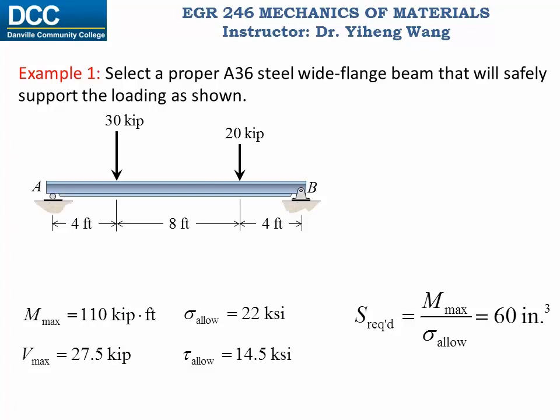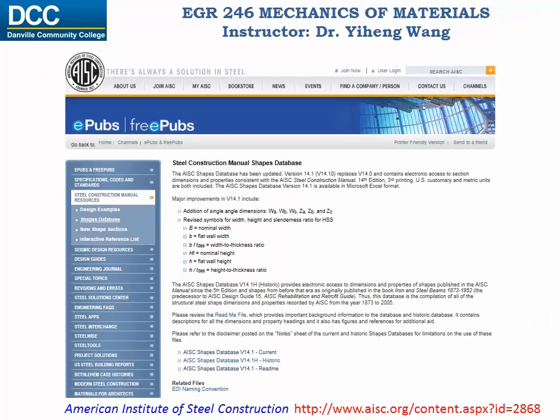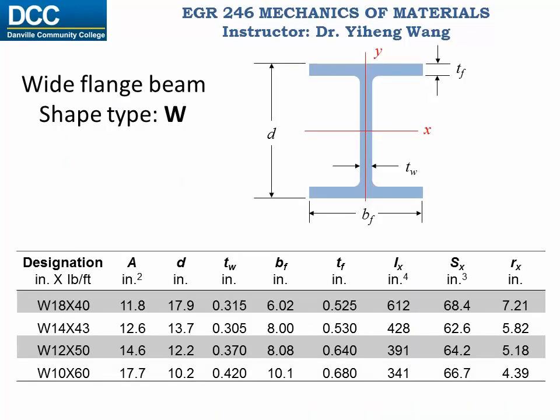Now the question is how do we use this information to guide us in the selection of the proper beam. For that we can refer to handbooks, brochures from manufacturers, or online databases. For example, a database can be downloaded from the website of the American Institute of Steel Construction, and this database includes the detailed specifications of almost 2,000 steel construction shapes. In this table I am showing a very small sample from the database. The data listed here are all in US customary units, but data in SI units are also available.